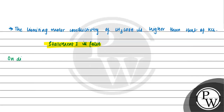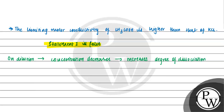Why? On dilution, our concentration decreases, which increases the degree of dissociation. If the degree of dissociation increases, the number of ions increases, which in turn increases molar conductance. So when concentration decreases, molar conductance actually increases.